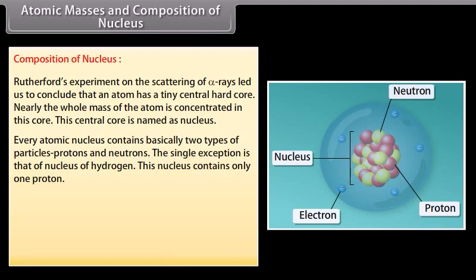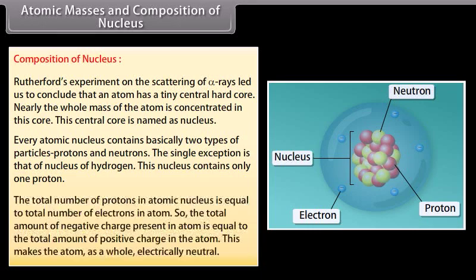Every atomic nucleus contains basically two types of particles, protons and neutrons. The single exception is that of nucleus of hydrogen. This nucleus contains only one proton. The total number of protons in atomic nucleus is equal to total number of electrons in atom. So, the total amount of negative charge present in atom is equal to the total amount of positive charge in the atom. This makes the atom as a whole electrically neutral.